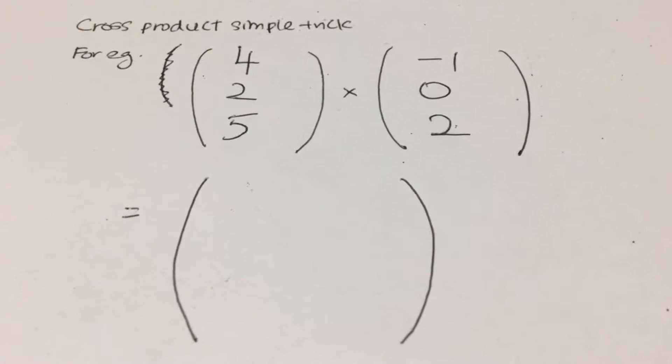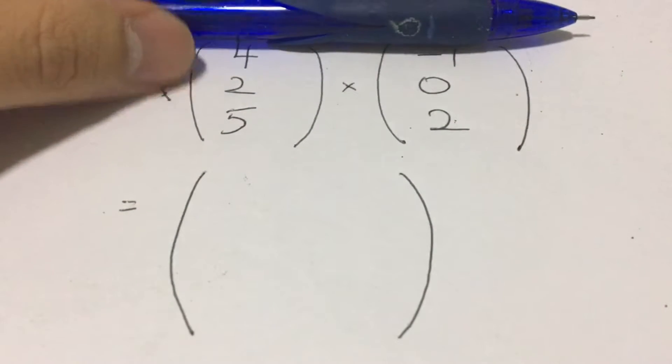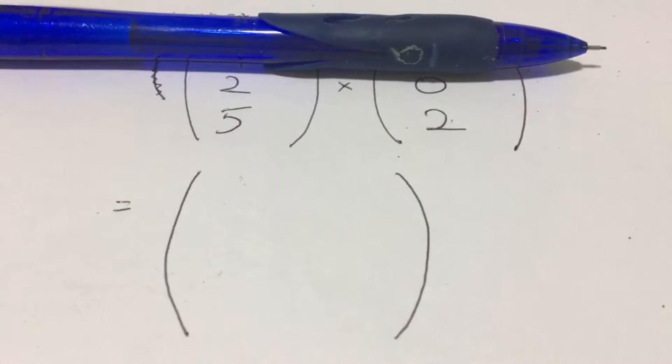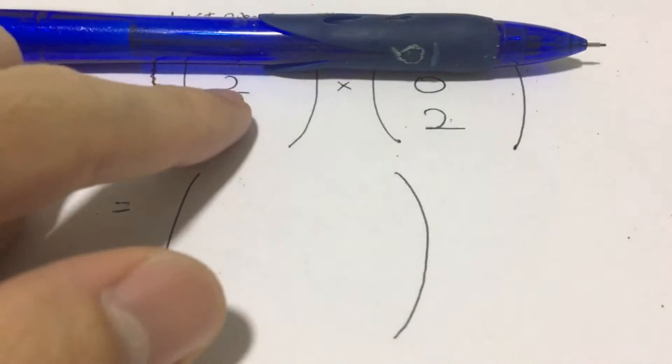So first thing what I do is that I cover the first row, and do the cross product.